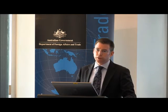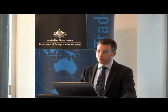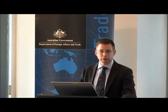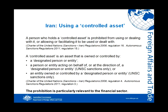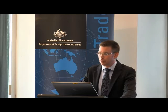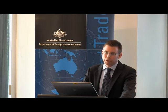Another common sanctions measure is the prohibition on using a controlled asset — included both in UNSC and Australian Autonomous Sanctions in relation to Iran. A person who holds a controlled asset is prohibited from using or dealing with it, or allowing or facilitating it to be used or dealt with. A controlled asset is an asset owned or controlled by a designated person or entity or those associated with designated persons or entities. This prohibition is particularly relevant to the financial sector.